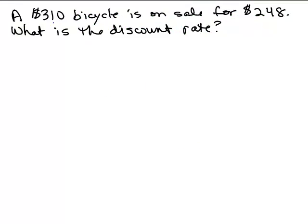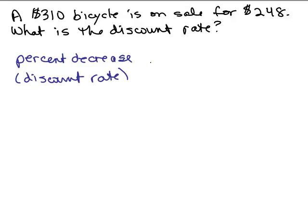So here's our next problem. A $310 bicycle is on sale for $248. What is the discount rate? So we're looking for the percent this time. And we need to know what the markdown was. Remember the discount rate is the same thing as the percent decrease. So the percent decrease is the same thing as the decrease amount, how much it was decreased by, over the original amount.